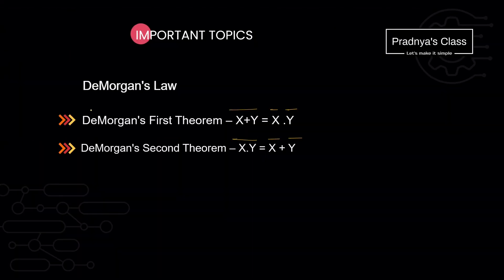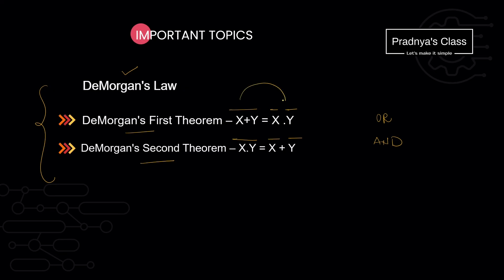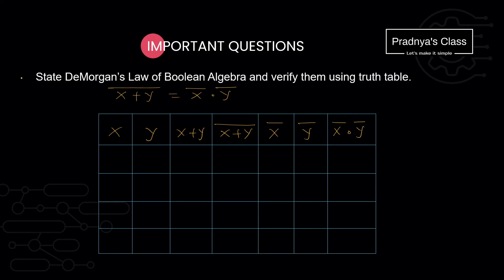There is one more important topic in this chapter we should not miss: De Morgan's law. There are two De Morgan's laws — one for OR logic gate and the other for AND logic gate. To remember: break the line and change the sign. You may get a question where you need to state De Morgan's law and verify it using a truth table.